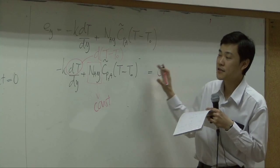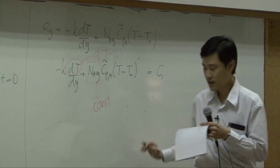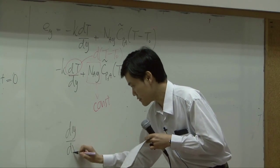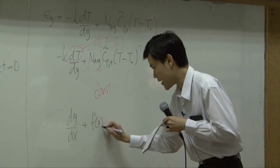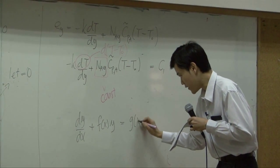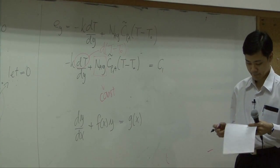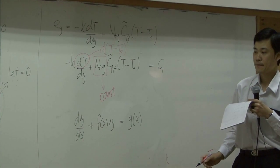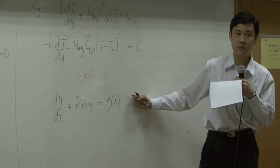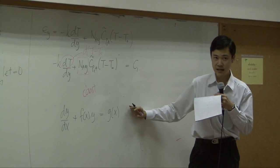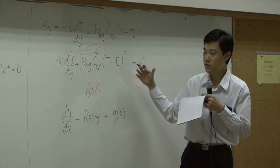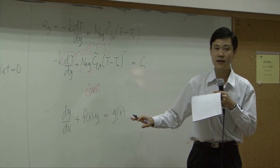So this is an ordinary differential equation. It can be written in the form of dy/dx plus function of x times y equal to another function of x. This kind of equation has a solution, and the solution can be found from your appendix — appendix C in the textbook.